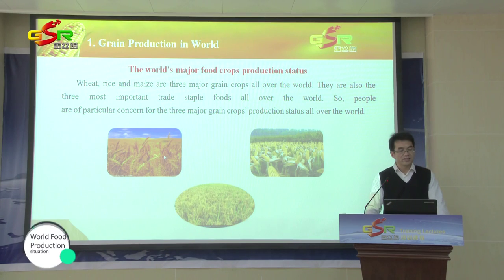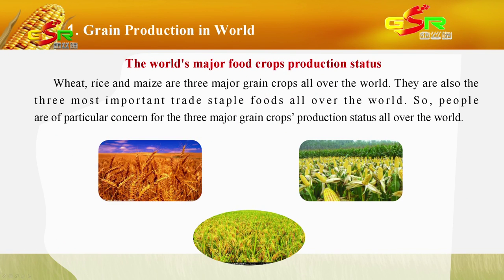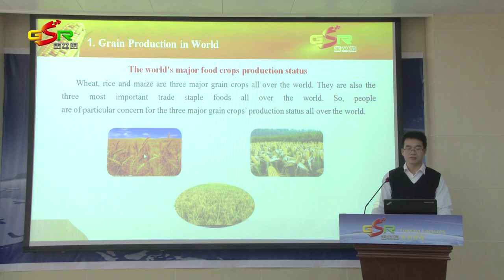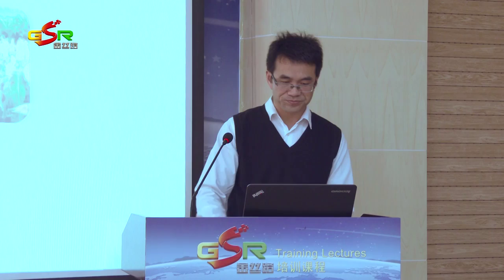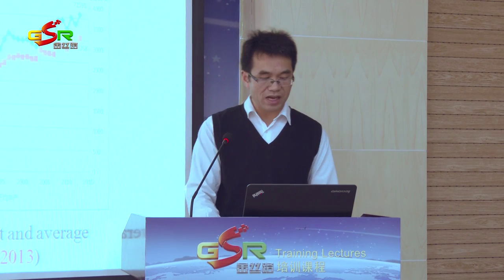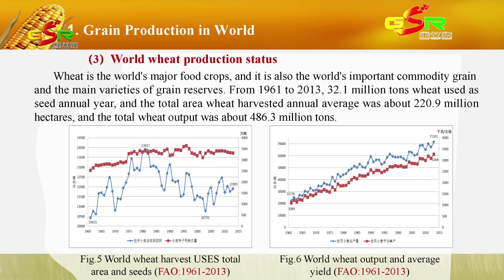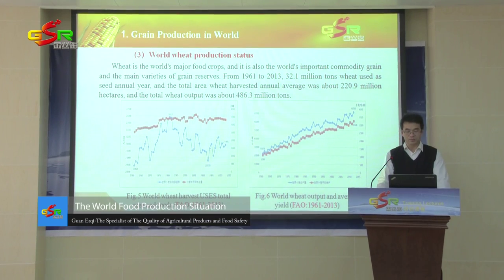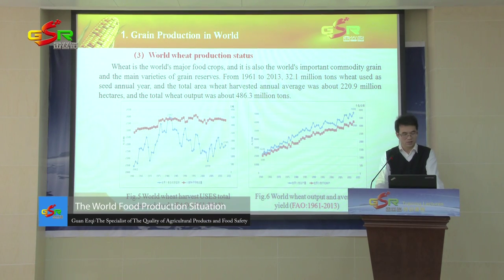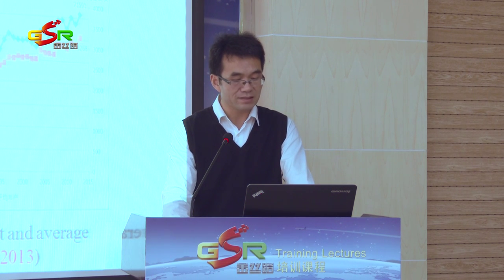Wheat, rice, and maize are the three major grain crops of the world, and also the three most important staple foods of the world. People are particularly concerned about the production status of these three major grain crops. This picture gives us information about the world wheat production status. Wheat is the world's major food crop and also an important commodity grain and main variety of grain reserves.